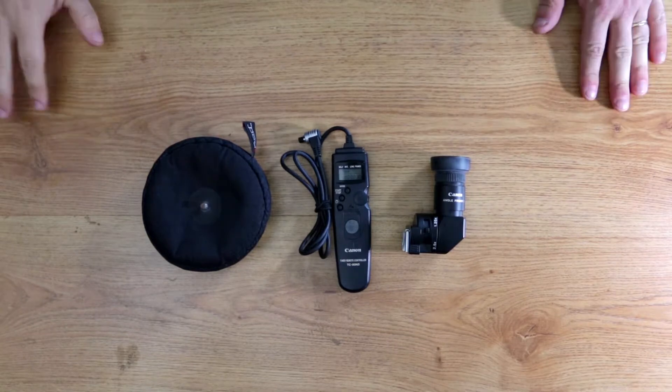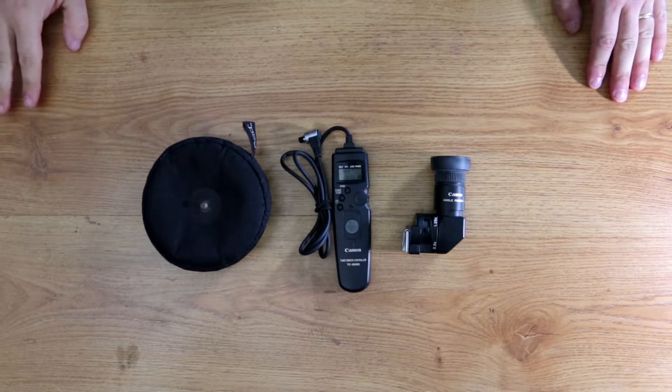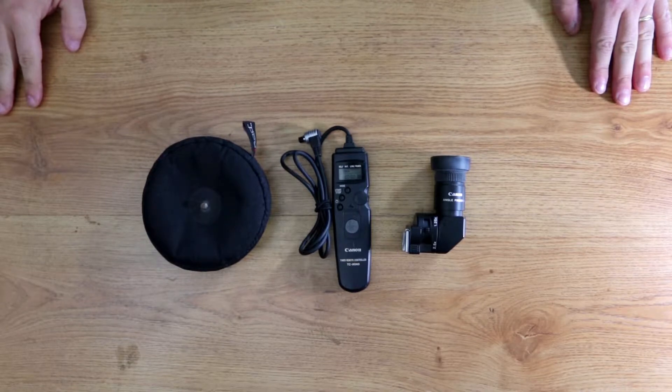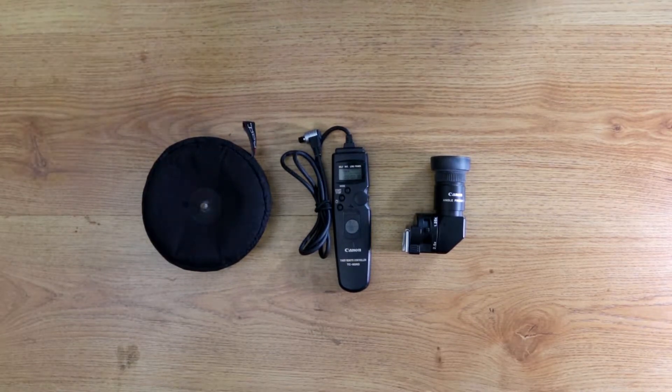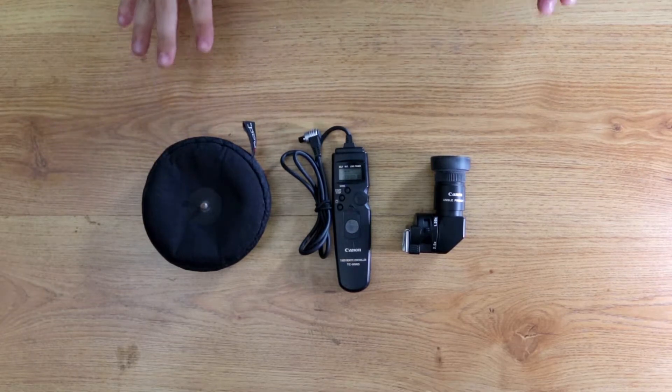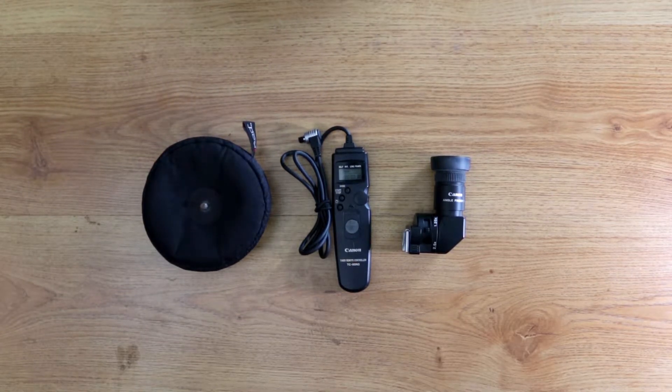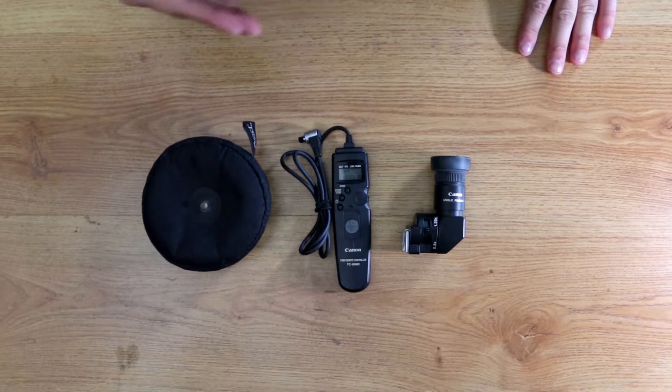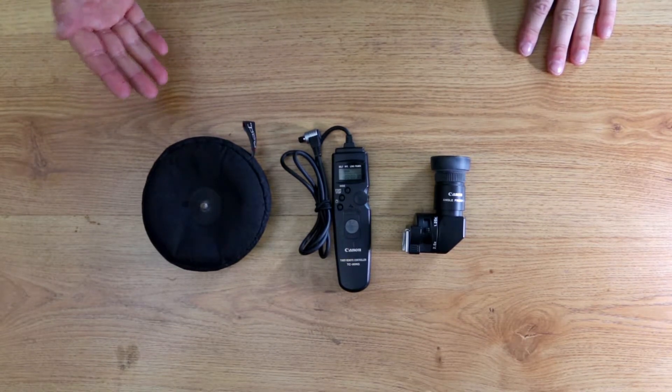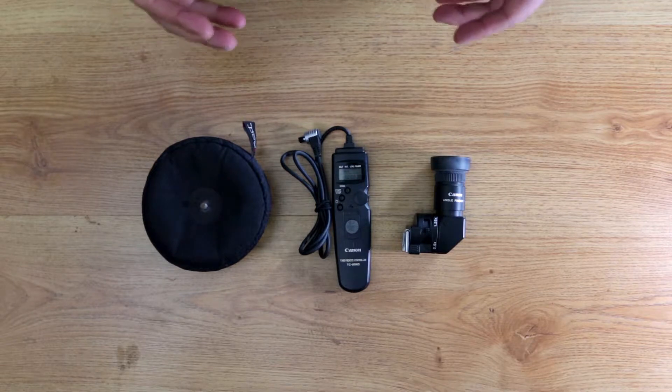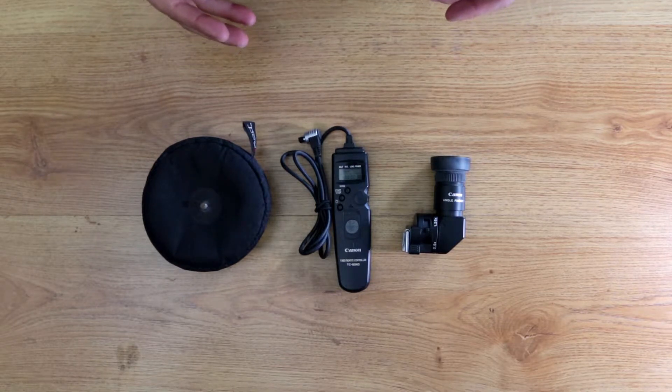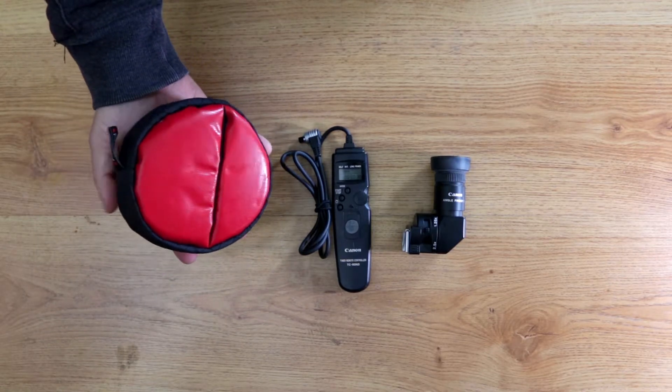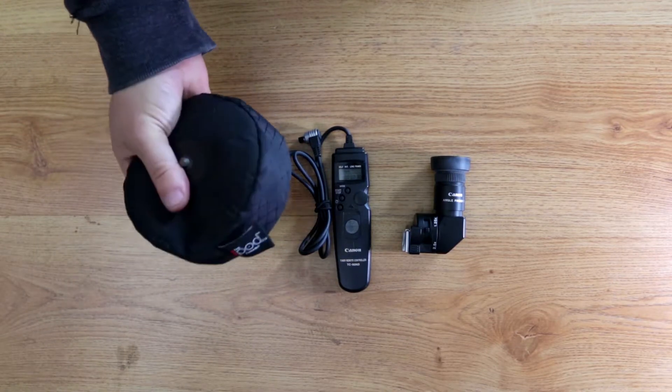The next items that I want to cover for macro photography are a couple little add-ons. By no means do you need these items, but they have proven very helpful for me in the past. First thing with any macro photography: you're usually very close to a subject using higher focal lengths, anywhere from 50 to 100, 180 millimeters, anything in that range. Movement is really gonna show up and blur your photos, so you've got to have a good way of stabilizing your camera and lens.